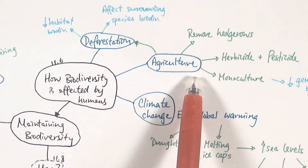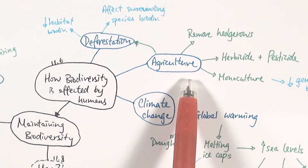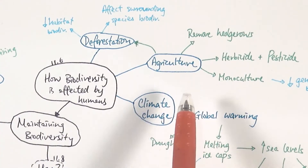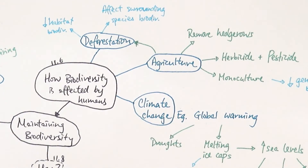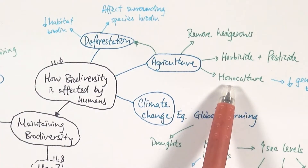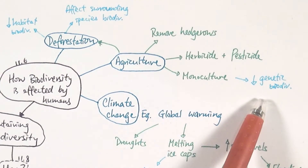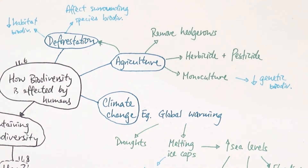With advances in genetic techniques, we can now use cloning, selective breeding, or genetic engineering to ensure crops grow quickly or have resistance to certain things. This tends to lead to monoculture, where all crops have the same genes — the same resistance genes, for example — decreasing genetic biodiversity. This can have a knock-on effect: if crops are resistant to pests but not to flooding, then flooding could wipe out the entire crop and the whole species may become endangered or even extinct.